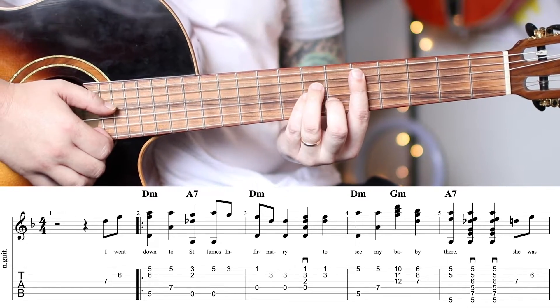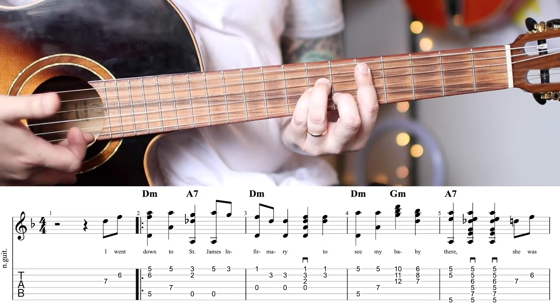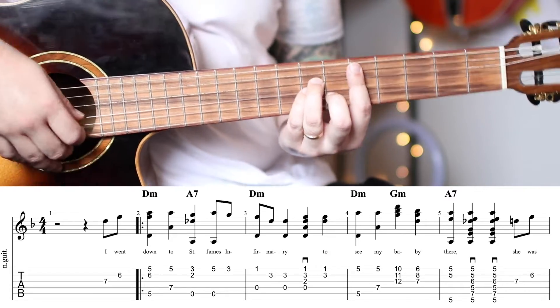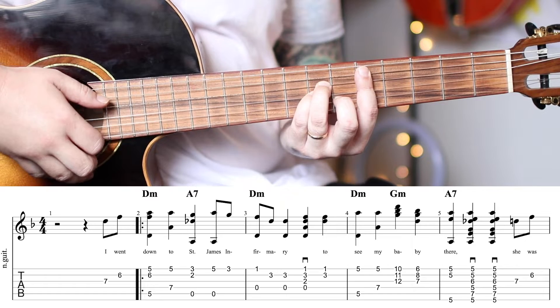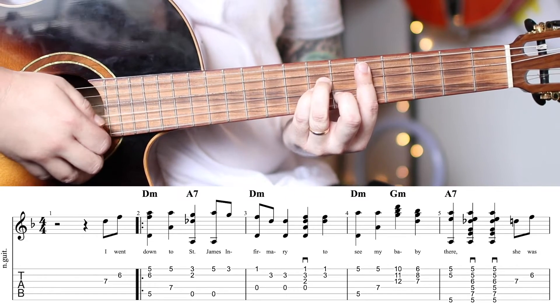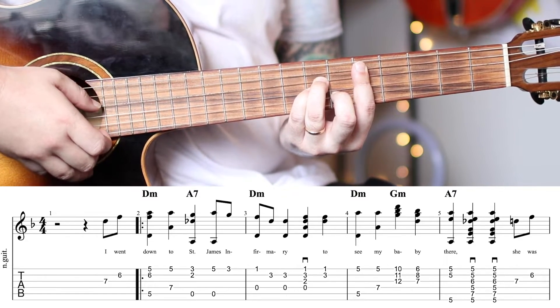After that, your thumb will drop down and grab the 7th fret of the D, and your middle finger will play the high E string alone. 4 and 1, 2.